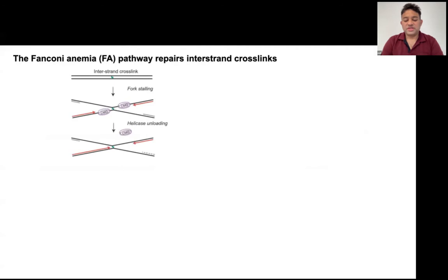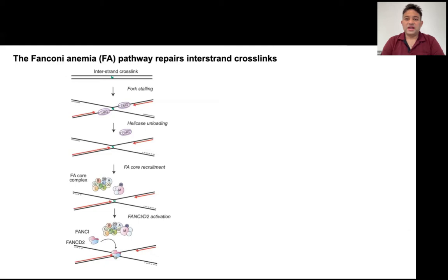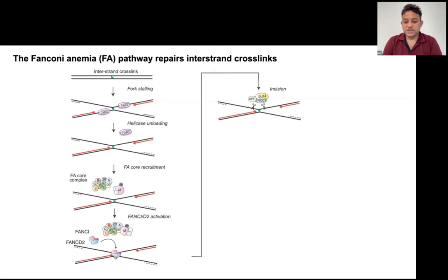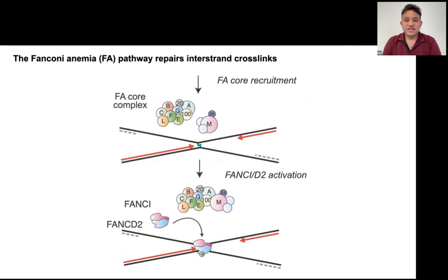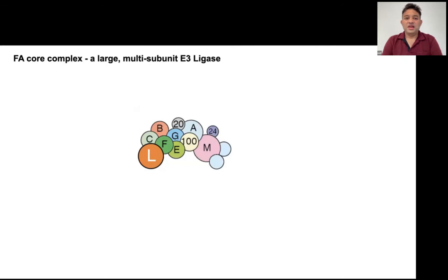So how does this pathway work? Interstrand crosslinks cause collision of the replication fork in S phase of the cell cycle. This collision is sensed by Fanconi anemia proteins. At least eight of these proteins form the E3 ligase called the FA core complex, which monoubiquitinates a heterodimer substrate made of FANCD2 and FANCI. The activation of FANCD2 and FANCI recruits a set of endonucleases that will unhook the interstrand crosslink, which gets eventually repaired by homologous recombination.